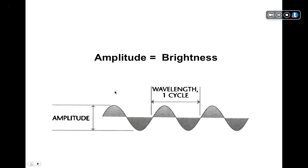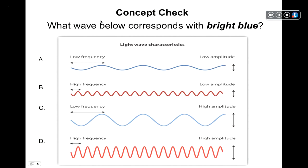Amplitude determines brightness. The greater the distance between the peak and the trough, the higher the amplitude, and therefore the greater the brightness. The lower the amplitude, the lower the brightness. Concept check: what wave corresponds with bright blue? The answer is D — high frequency and high amplitude. Blue light is characterized by short wavelengths, and bright light is characterized by high amplitude.